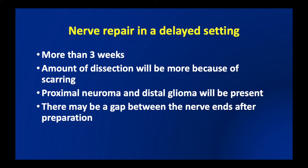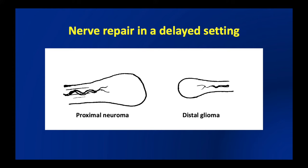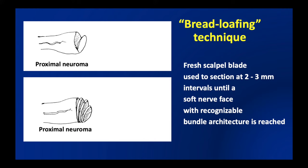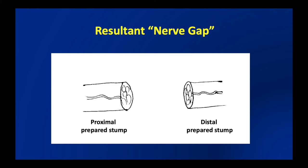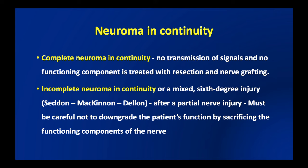Not all patients present early. When presentation is more than three weeks, nerve repair is done in a delayed setting. The amount of dissection will be more because of scarring, and a proximal neuroma and a distal glioma will be present at the proximal and distal ends of the cut nerve, with a possible gap after preparation. Using the bread-loafing technique with a fresh scalpel blade, we section at two to three millimeter intervals until a soft nerve face with recognizable bundle architecture is reached — done on both proximal and distal segments. At the end of preparation there will be a nerve gap between the prepared stumps.